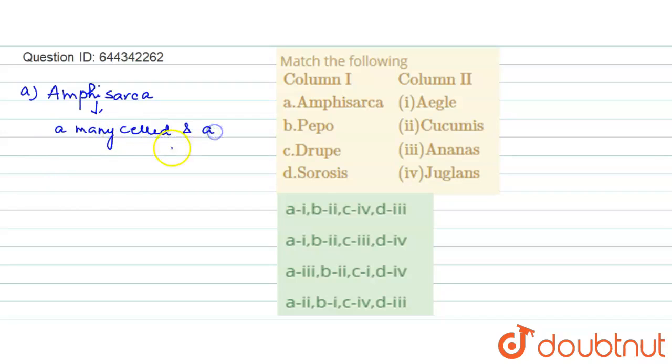It's a many-seeded indehiscent fruit that is pulpy inside and has a hard or woody ring. Ring is the tough outer skin of fruit.